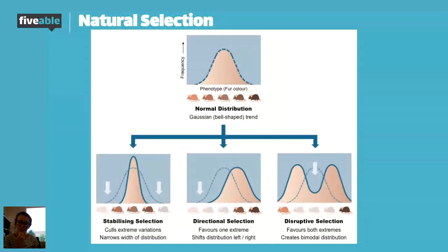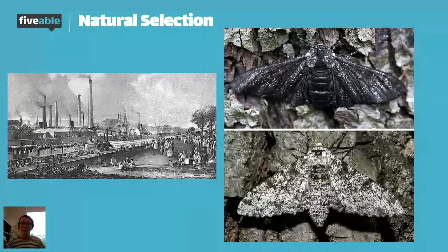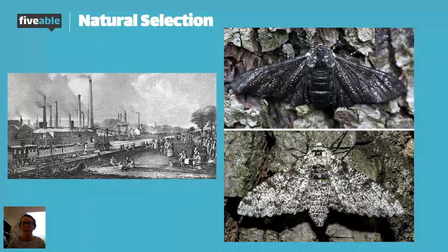Sexual selection also sometimes comes up. An easy example is lions or peacocks — the males of those species have very distinguishing features, like the big mane of the lion or the beautiful tail of the peacock, which females in that species actually select for, and that can lead to changes. This is one example that AP loves to cover because it shows up in free responses and multiple choice questions on the AP exam.